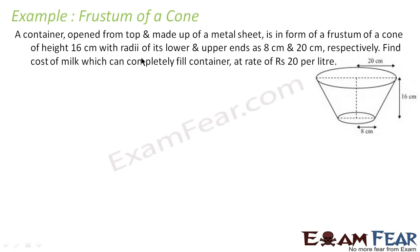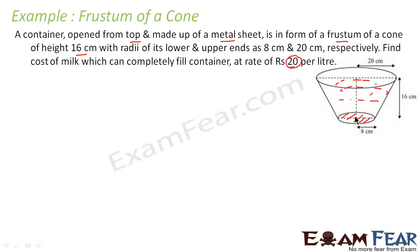Let's take one more example. A container opened from the top, made of metal sheet in the form of a frustum. It has height 16 centimeters and radii 8 centimeters and 20 centimeters. We have to find the cost of milk that can be filled into it at the rate of ₹20 per liter. First, we find the volume of the frustum.